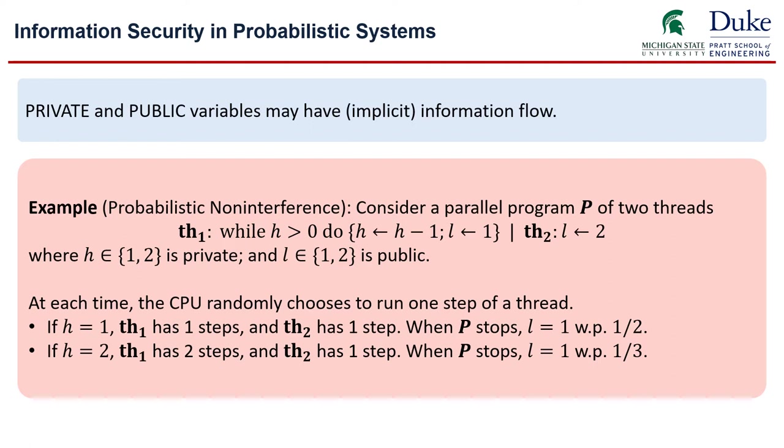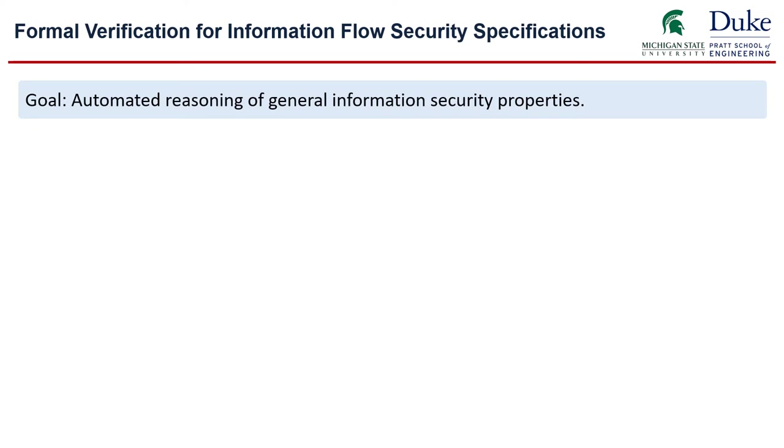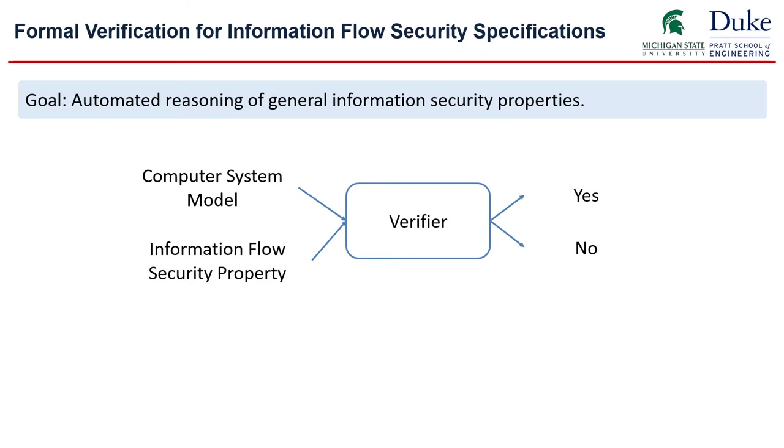Therefore, an outsider repeatedly observing the public variable may infer the value of the private variable. To prevent such kind of information leakage from happening, in this work we are interested in developing an automated tool that can check general information security properties on a computer system. Specifically, we would like to develop a verifier that can read as a model of interest and also a general property of interest and then decide whether the security property holds on a model or not automatically.